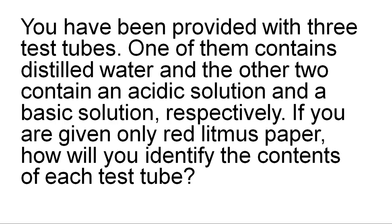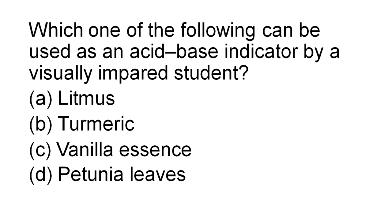Q: If there is a visually impaired student who cannot see, which indicator can we use — litmus, turmeric, vanilla essence, or petunia leaves? A: Litmus changes color, so a visually impaired person cannot identify it. Turmeric also changes color — yellow in acidic, red in basic medium. Vanilla essence changes its smell. So a visually impaired student can identify whether a substance is acid or base using vanilla essence, since it changes smell rather than color.